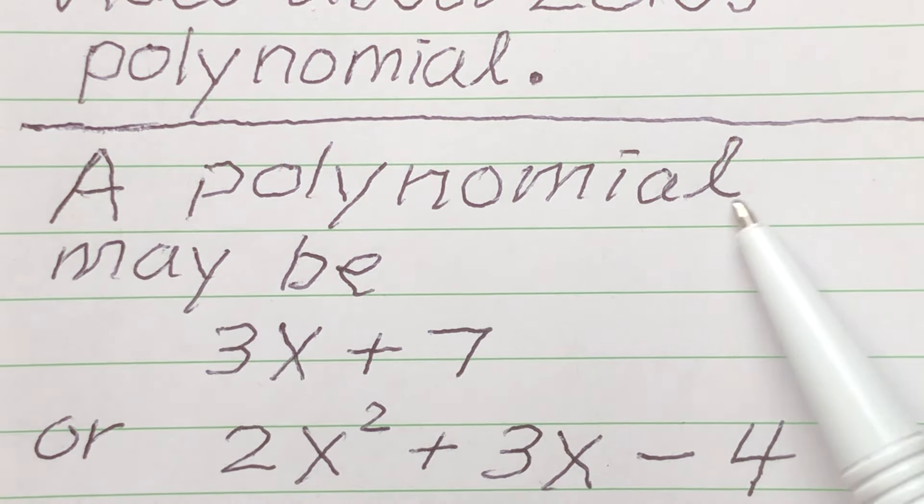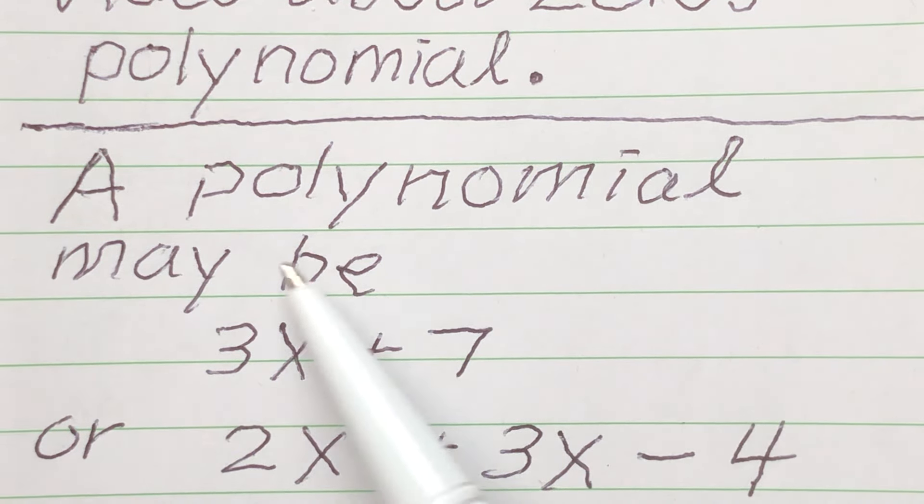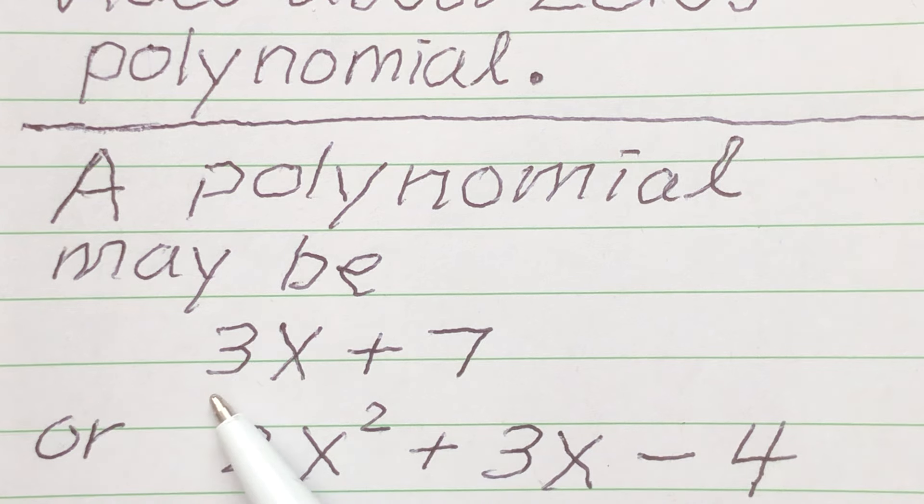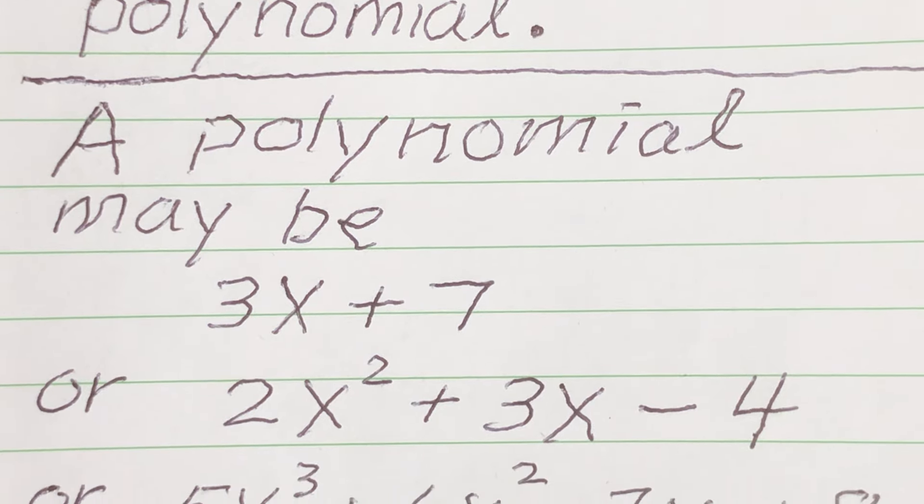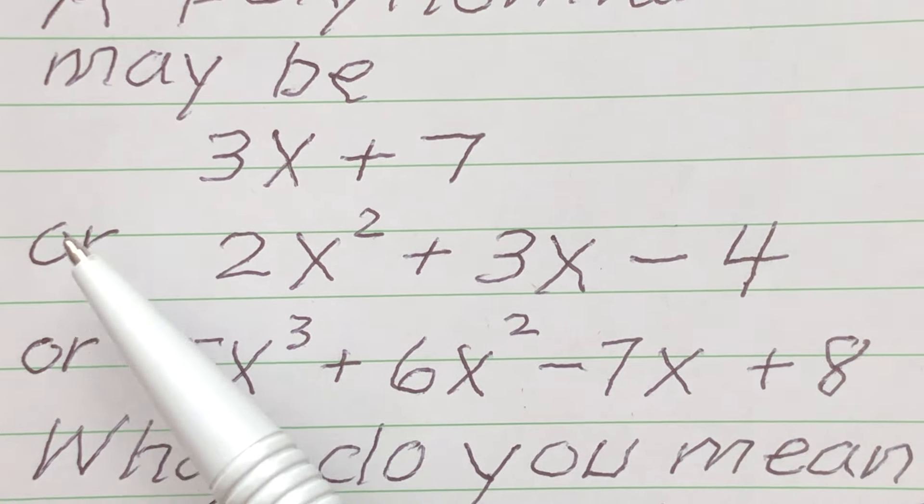A polynomial may be as simple as this: 3x plus 7. Maybe a little longer.